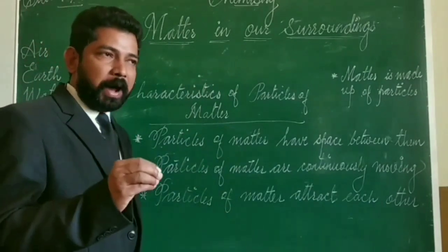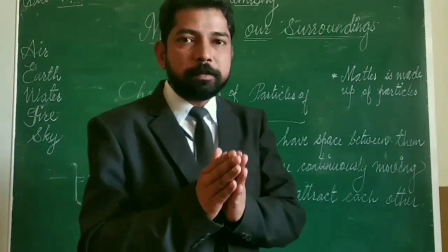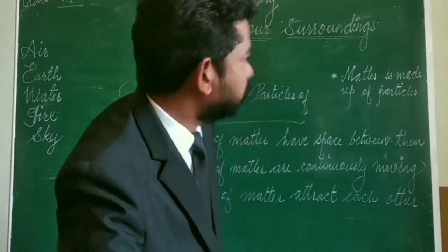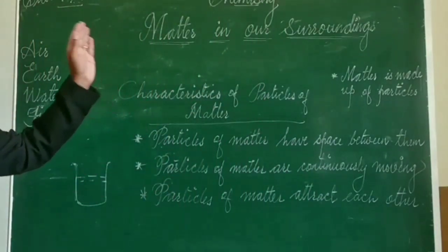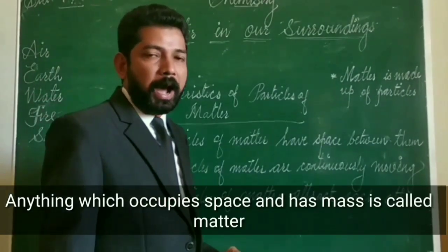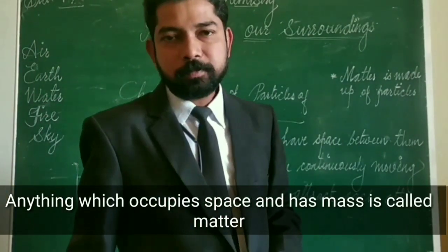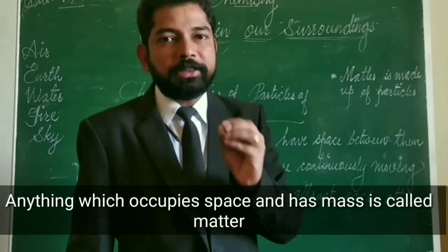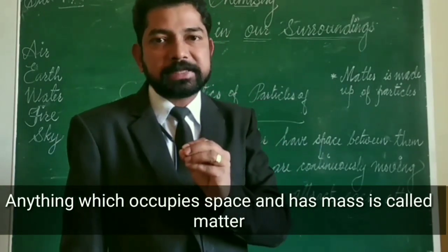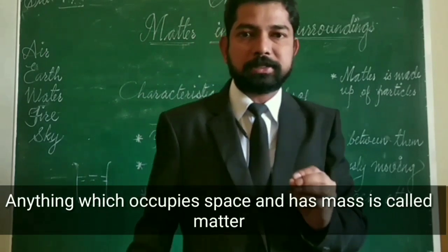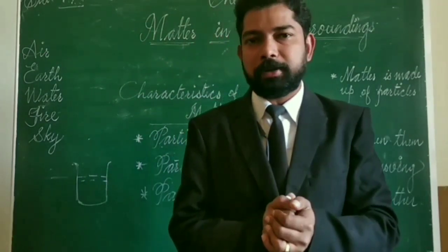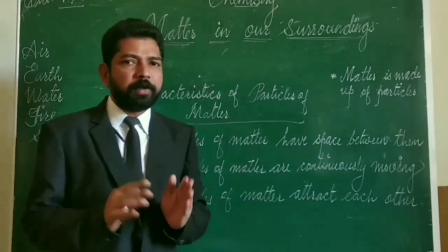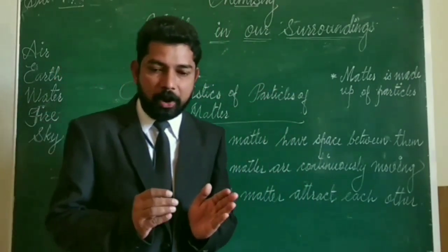This matter has some properties. All matter occupies space and has mass. We can define matter as anything which occupies space and has mass. There will be different types of matter we can see around us.